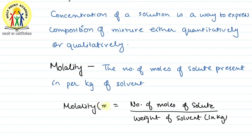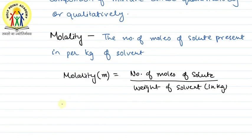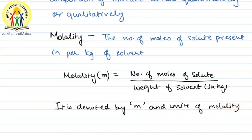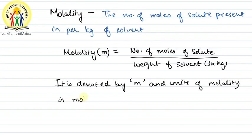Molality is denoted by small m and units of molality is mol per kg.